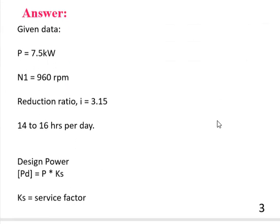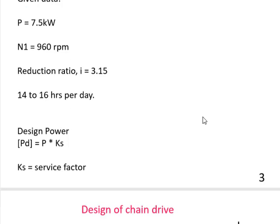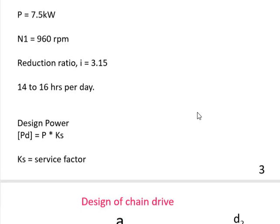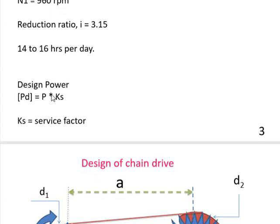The given data includes power of 7.5 kW and speed of 960 RPM, along with the reduction ratio. We are interested in finding the design power. The design power is the power given in the question multiplied by the service factor, represented by Ks.